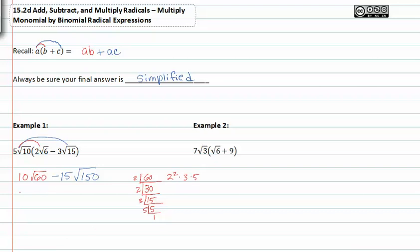So I can rewrite the first term as ten root two to the second, three and five. In the blue term we have negative fifteen which will stay as it is, but we can prime factor one fifty.